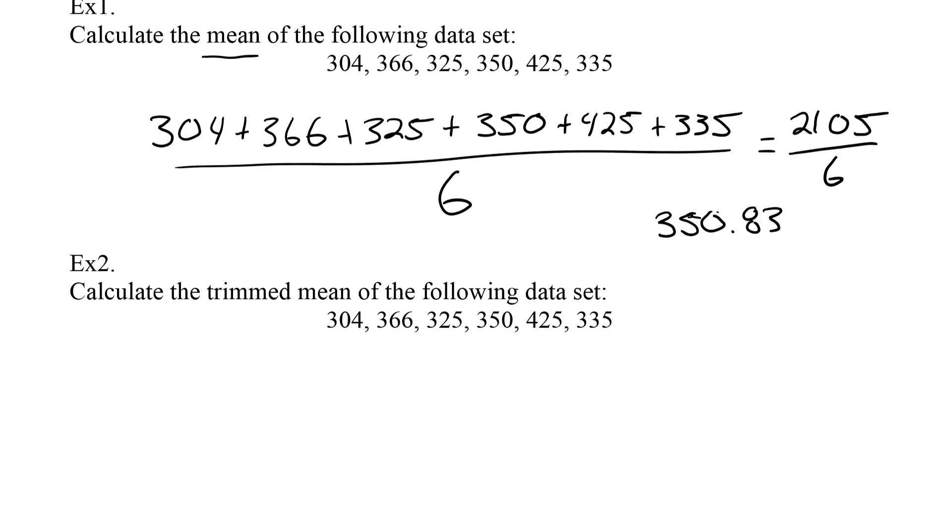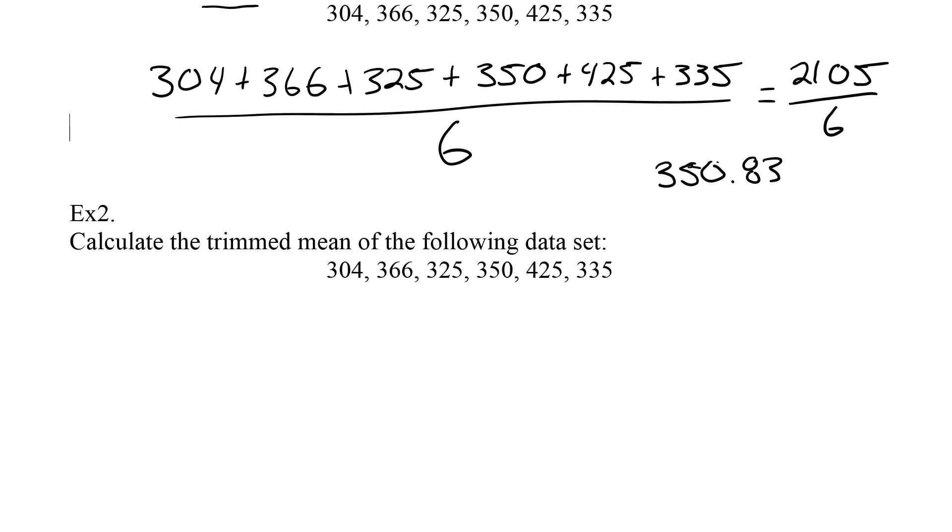Now let's look what happens when we trim our mean. So when we are trimming our mean, we have to remove the highest and the lowest. So if it just says trimmed, you will do the high and the low. In this case, my lowest value is 304, so I'm going to cross that one out. And my highest value is 425, so I'll cross this one out.